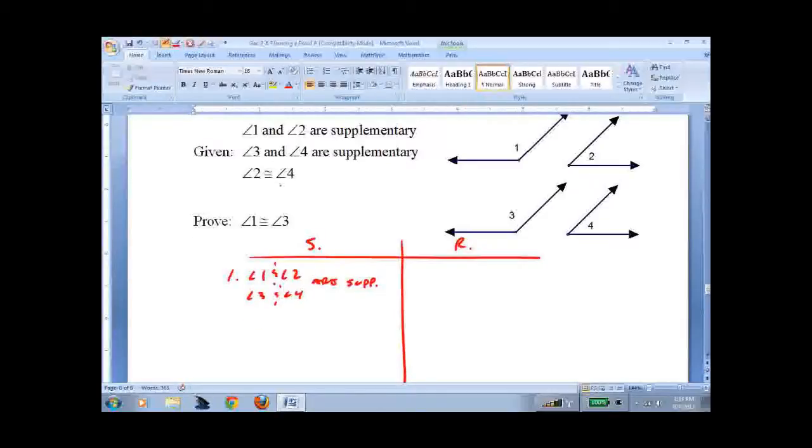I'm going to leave angle 2 as congruent to angle 4 off of there for now, just as an example of a way you could do it without putting it as a given. But at the same time, if you put it in there, that's really not a problem.